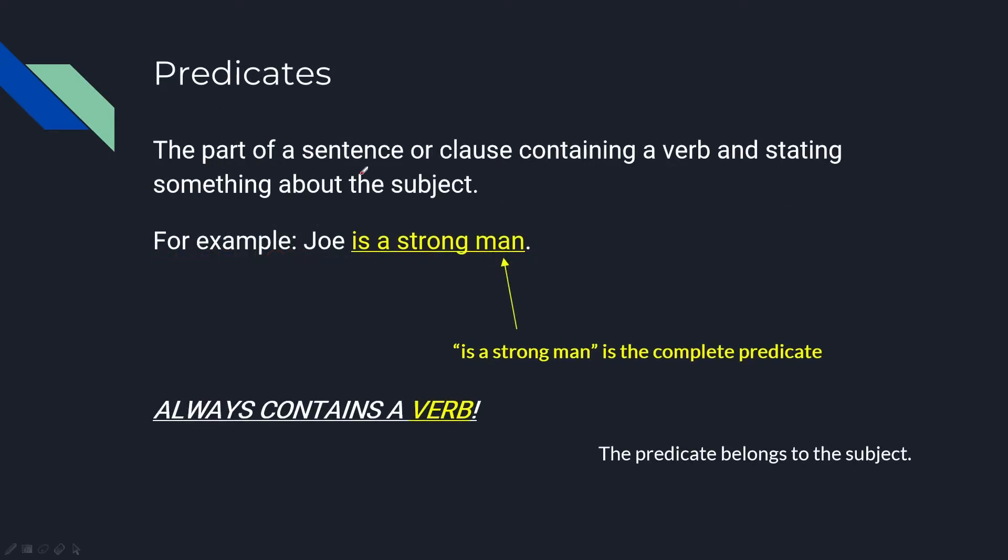Predicates: the part of a sentence or clause containing a verb and stating something about the subject. For example, 'Joe is a strong man' - 'is a strong man' is the complete predicate.